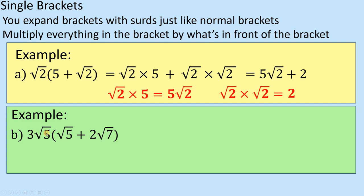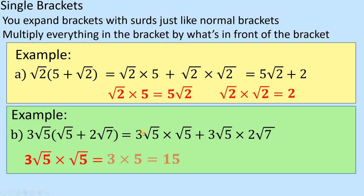The same kind of process involved though, I'm going to do 3 root 5 times root 5, and I'm going to do 3 root 5 times 2 root 7. So let's do these two stages. So 3 root 5 times root 5, and 3 root 5 times 2 root 7. So let's do these two first. Well, 3 is the only whole number, so I'm going to do 3 times both of these two times together. So root 5 times root 5 is 5, times by the 3 is going to give me 15.